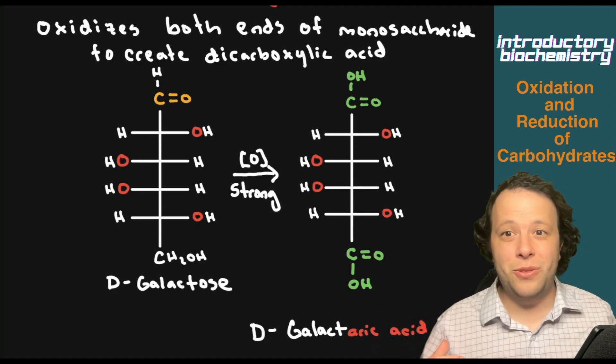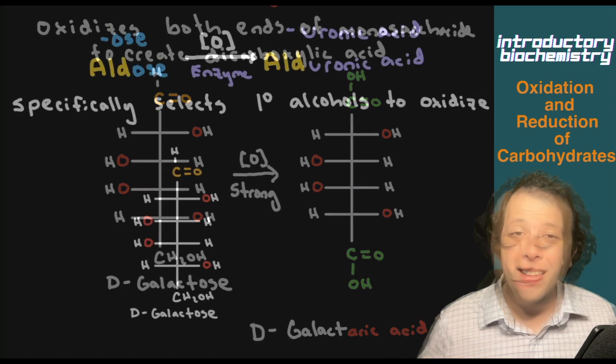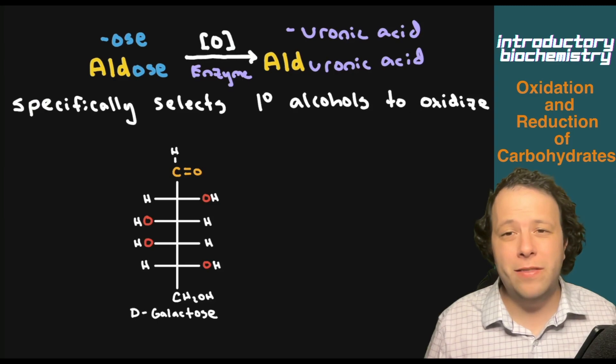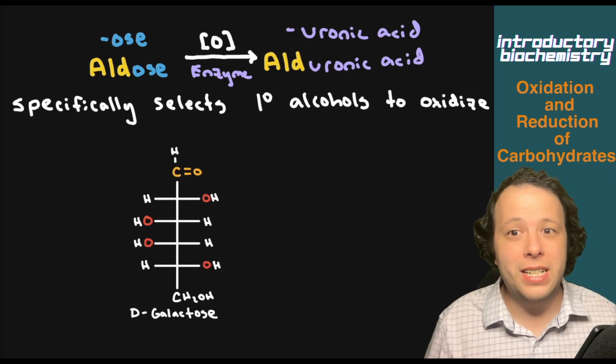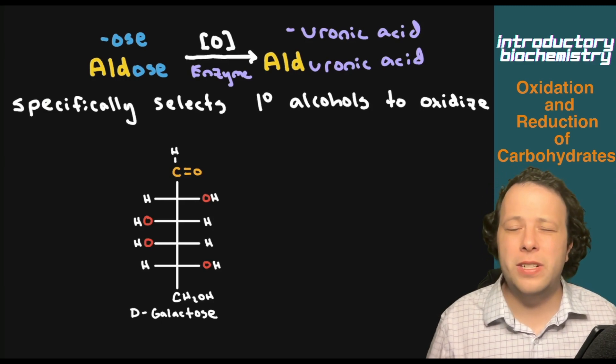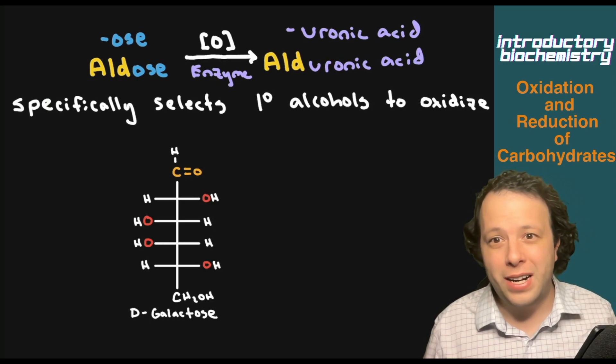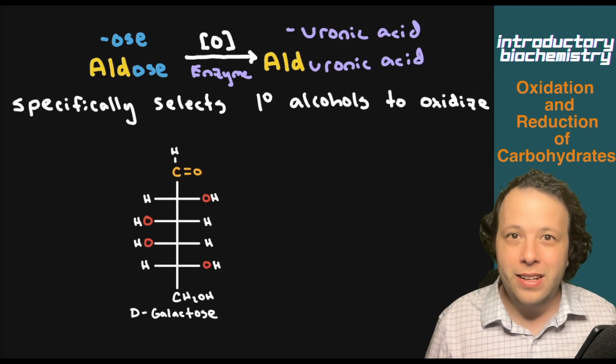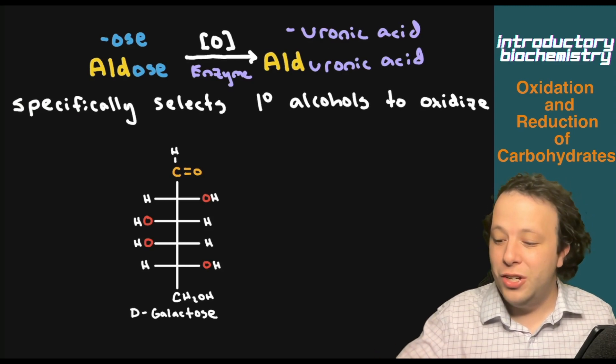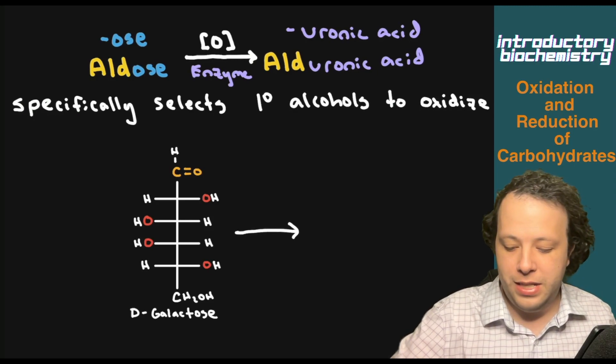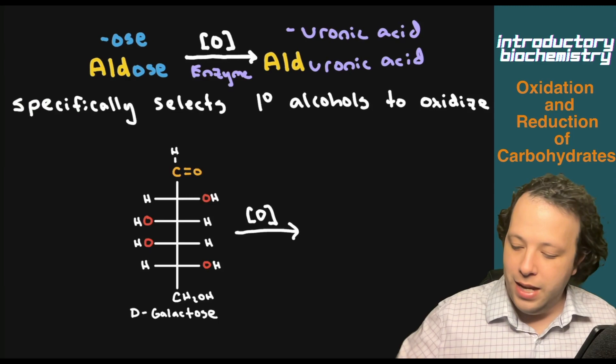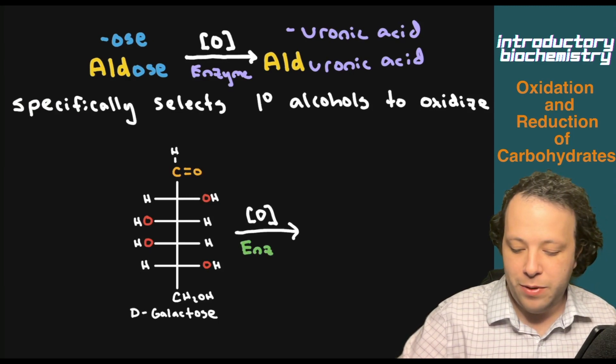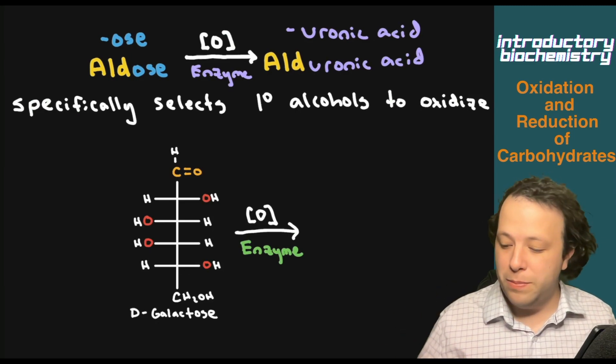Let's take a look at the last one in terms of how your body works with enzymes. The last type of oxidation in terms of the metabolic processes is when an aldose reacts specifically with an enzyme. Remember, enzymes are specific. They choose exactly what they want to react with because these molecules fit and bind with them in a very specific way. One way the enzyme can react with an aldose is that it can specifically select primary alcohols to oxidize.